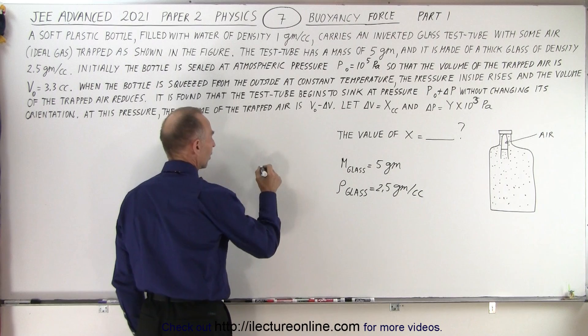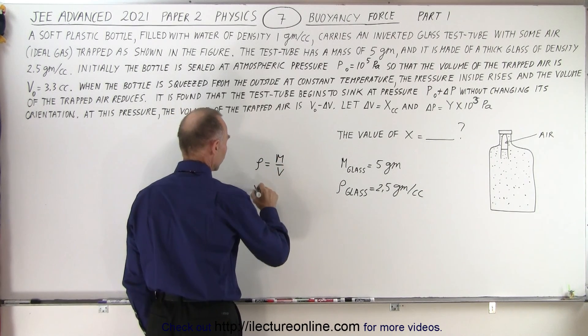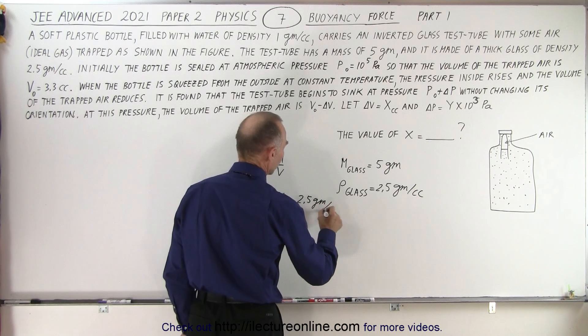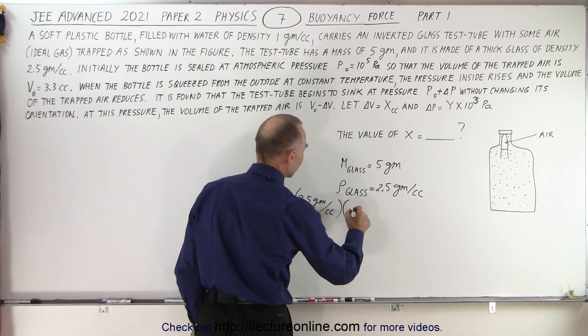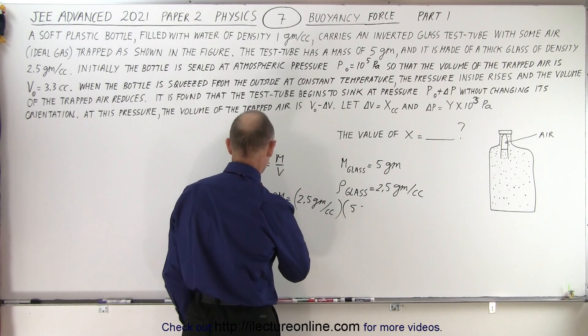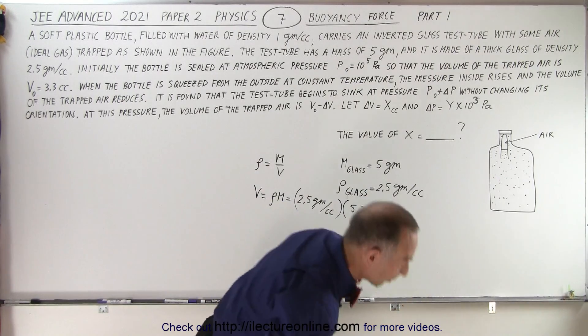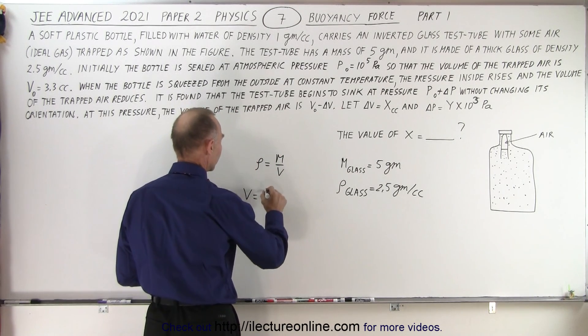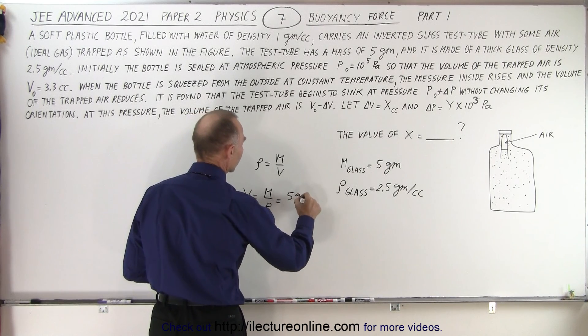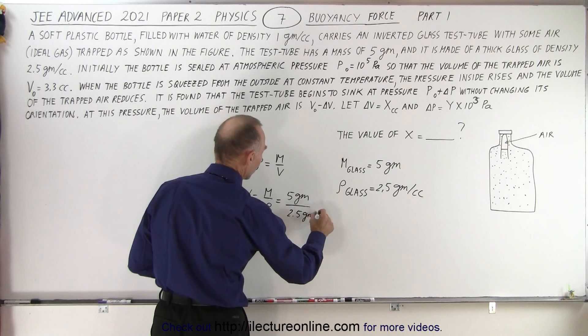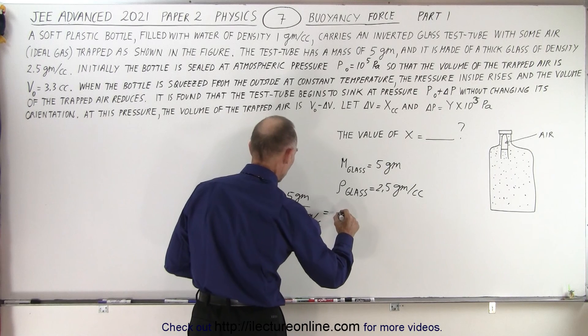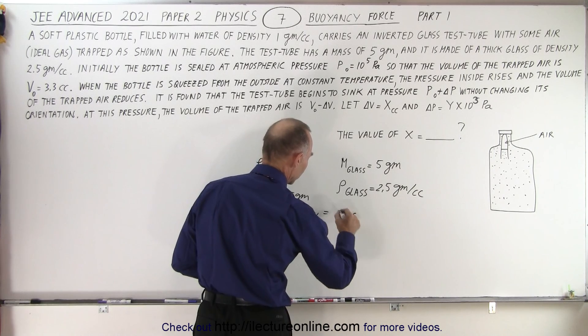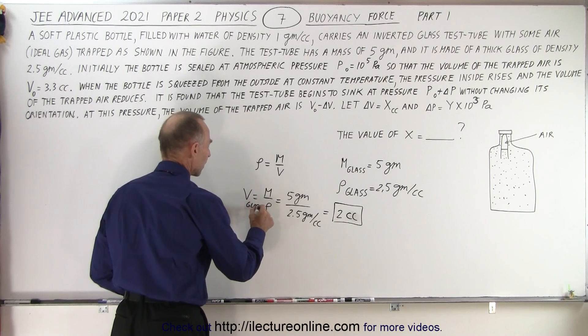All right, so now we know that density is equal to mass divided by the volume, so the volume is equal to mass divided by density. The mass is five grams, the density is 2.5 grams per cubic centimeter, and so this is equal to two cubic centimeters. Well I guess they keep writing cc, I'll keep writing cc as well. So two cubic centimeters is the volume of the glass.